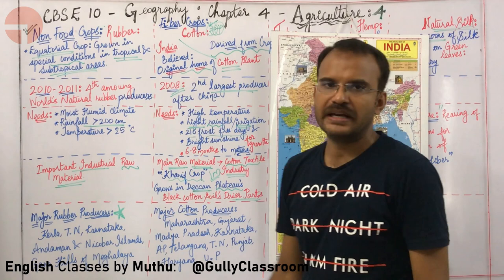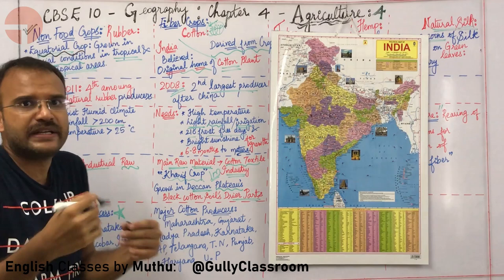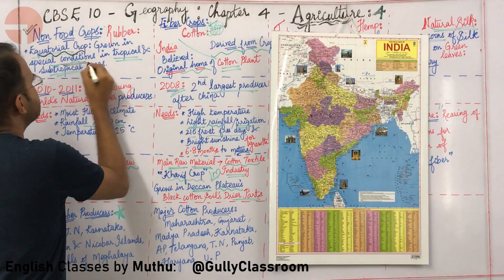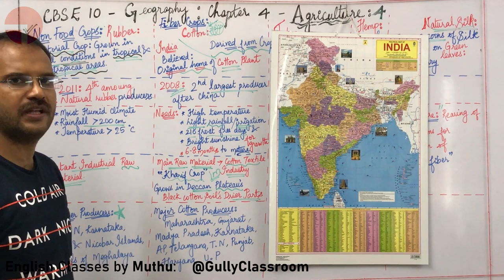Let us study about rubber. Rubber is an equatorial crop. The meaning of equatorial crop is that it needs extreme sunshine and a lot of rain. So it is grown in special conditions in tropical and subtropical areas.